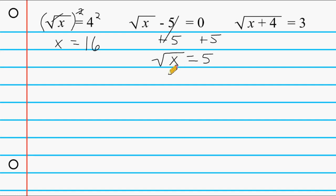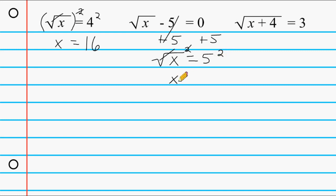Now we should know that the square root of 25 is equal to 5, but we're going to go ahead and show our work. So we're going to square this quantity because a square and a square root will always cancel each other out, and we're going to square the other side of our equation as well. That leaves us with just an x on the left, and on the right hand side 5 squared is equal to 25.